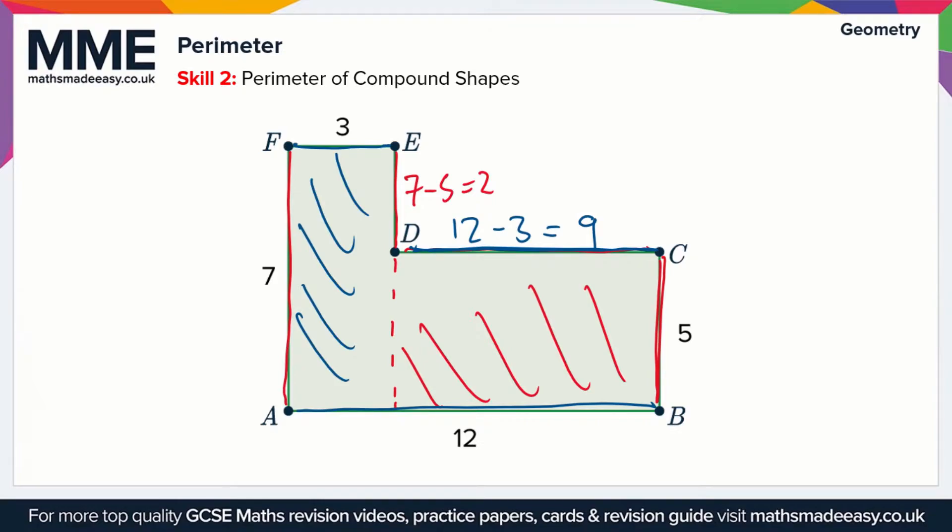Now we're in a position to work out the perimeter because we have the missing side lengths. So perimeter, or P for short, is going to be equal to 2 plus 9, and then we'll just go around the sides, plus 5 plus 12 plus 7 plus 3. If you add all of these up you should get a value of 38. There's no units in this case so we'll just leave our answer as 38.